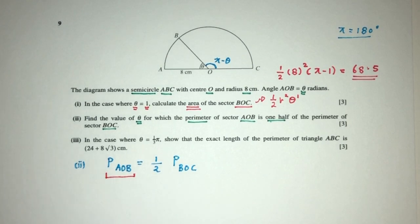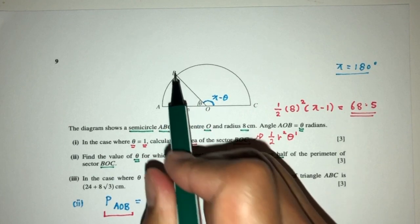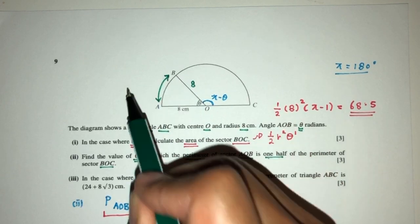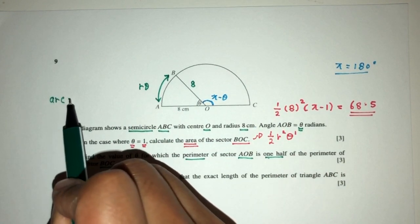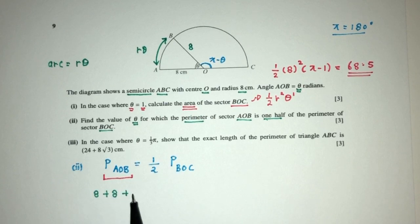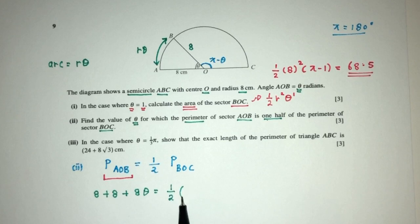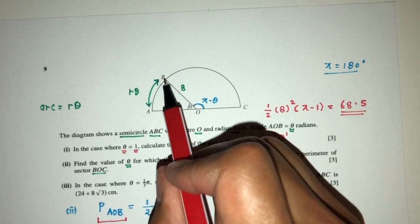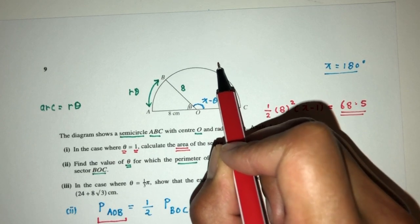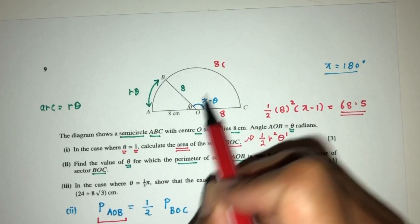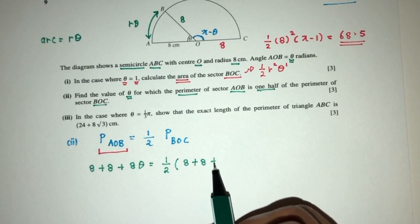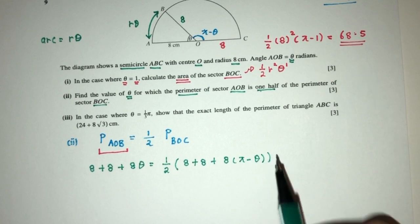How would you find the perimeter of AOB? AOB is this sector. The perimeter will be the two radii — each 8 — plus the arc length. Arc length equals R times theta, so arc length equals 8 theta. So the perimeter of AOB is 8 plus 8 plus 8 theta, equal to half times the perimeter of BOC. For BOC, we add the two radii plus the arc length: 8 plus 8 plus 8 times (pi minus theta).